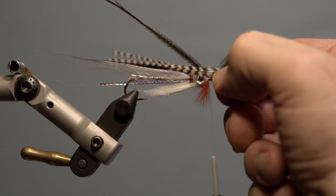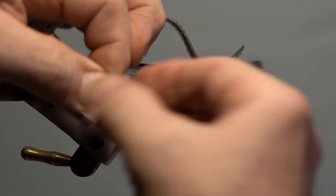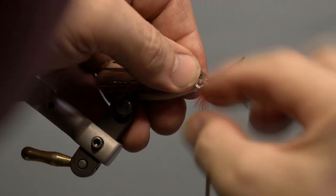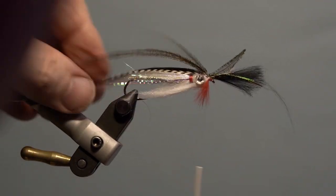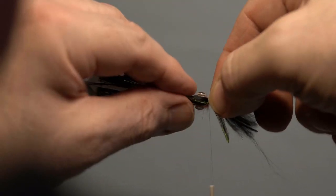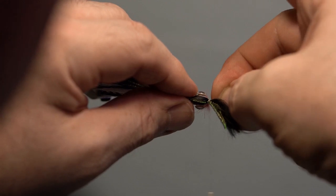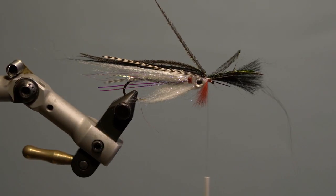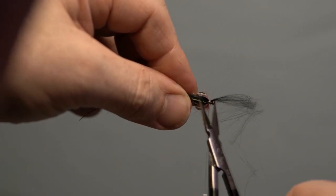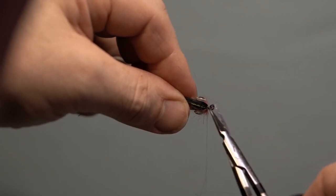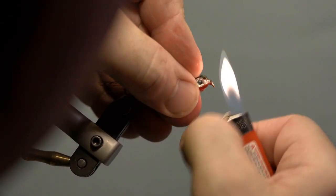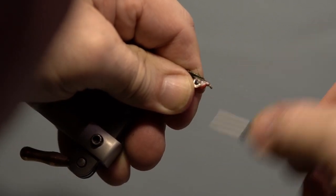Finally, add the side wings, grizzly hackle tips slightly shorter than the top wing. Secure and trim the cuts and excess wing. Any strands that are left sticking out past the eye, I use a lighter to singe off. Build up the thread with whip finish and trim.